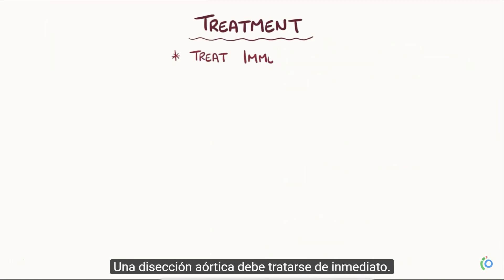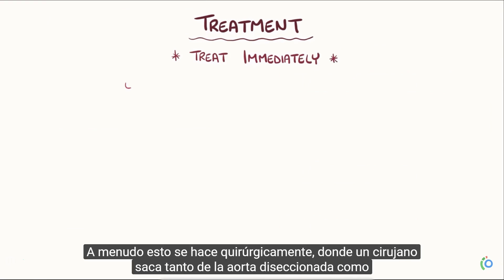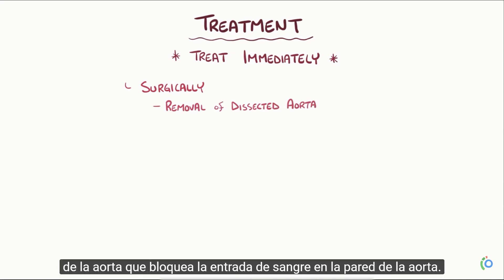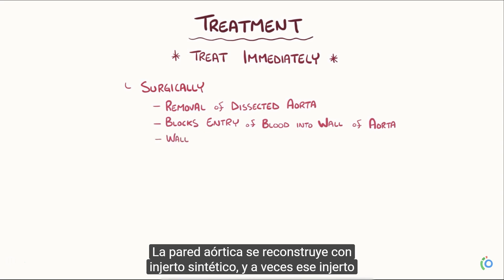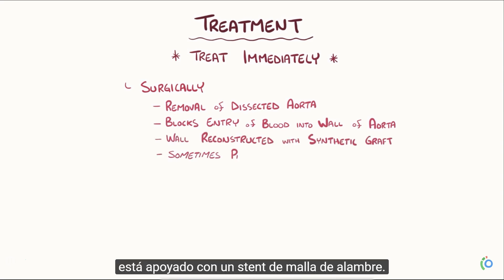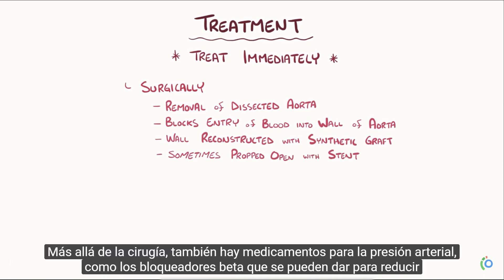There's also CT angiogram and magnetic resonance angiogram, both of which look closely at the blood vessels. An aortic dissection needs to be treated immediately — often this is done surgically, where a surgeon takes out as much of the dissected aorta as possible and blocks the entry of blood into the wall of the aorta. The aortic wall is then reconstructed with a synthetic graft, and sometimes that graft is propped open with a wire mesh stent.